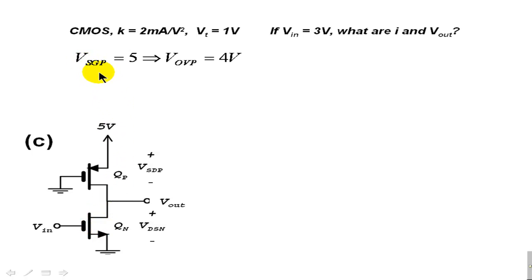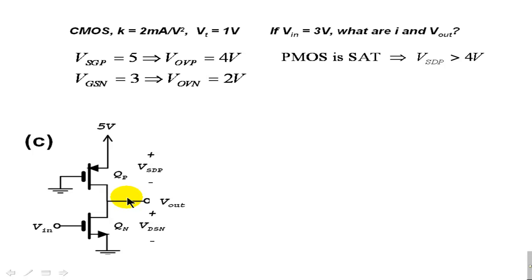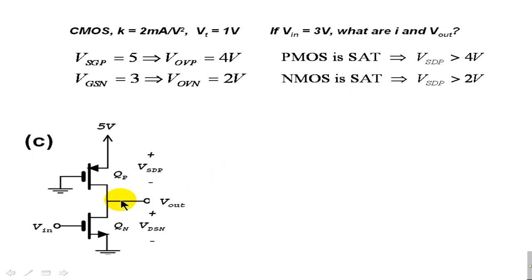For the P transistor, the source-gate voltage is 5, so the overdrive voltage is 5 minus 1 = 4 volts. That means if the P transistor is going to be in saturation, the source-drain voltage VSDp has to be more than 4 volts. For the N transistor, the gate-source voltage is 3 volts, so the overdrive voltage is 3 minus 1 = 2 volts only. For the N transistor to be in saturation, the drain-source voltage VDSn has to be more than 2 volts.